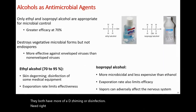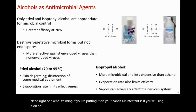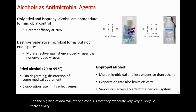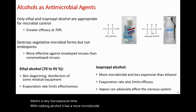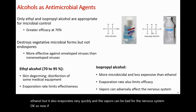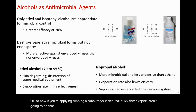Skin de-germing refers to applying alcohol to your hands, while disinfection refers to using it on inanimate objects like medical equipment. The big downfall of alcohols is that they evaporate very quickly, resulting in a very short exposure time. Rubbing alcohol has a more microbicidal effect and is a little bit cheaper than ethanol, but it also evaporates quickly and the vapors can be harmful to the nervous system. A quick application to skin is fine, but prolonged exposure to those vapors can negatively affect the nervous system.